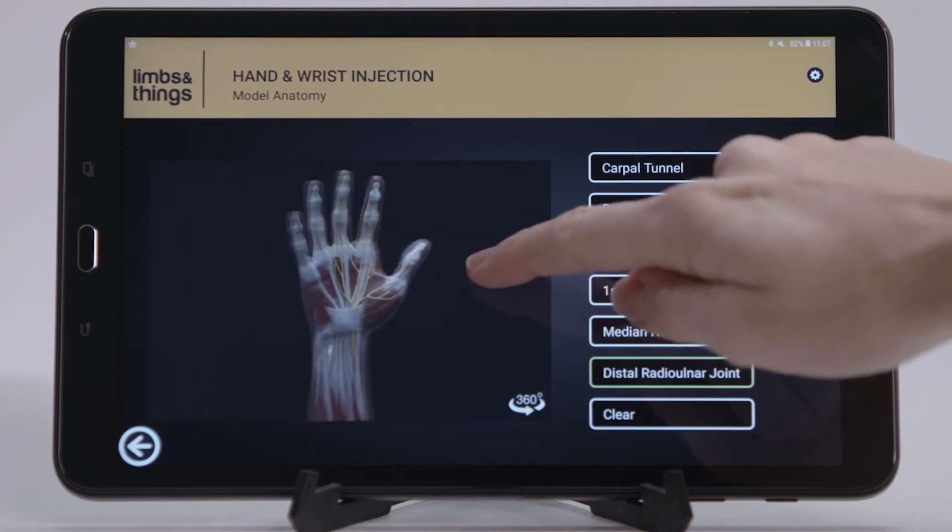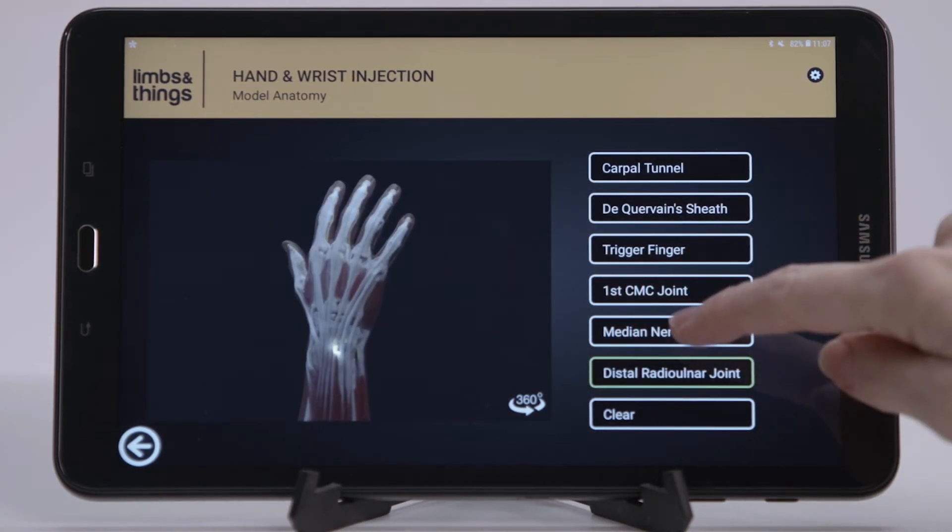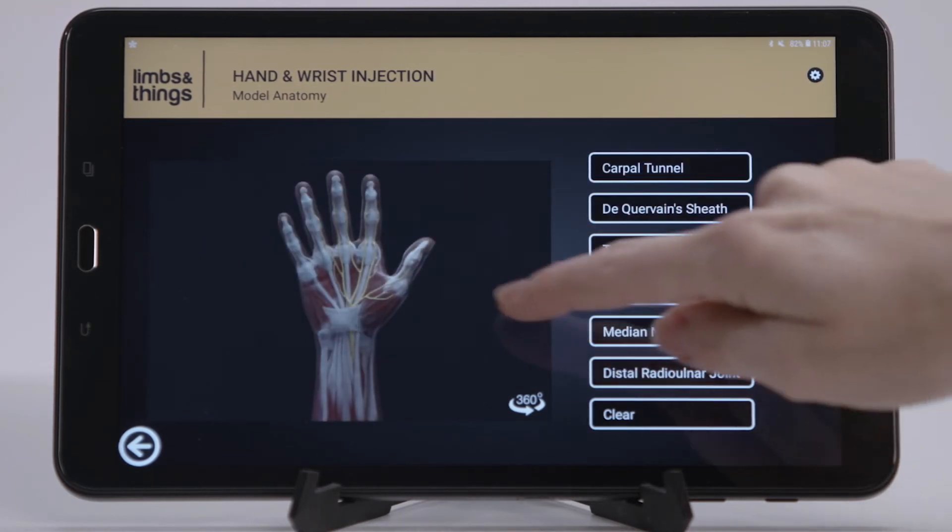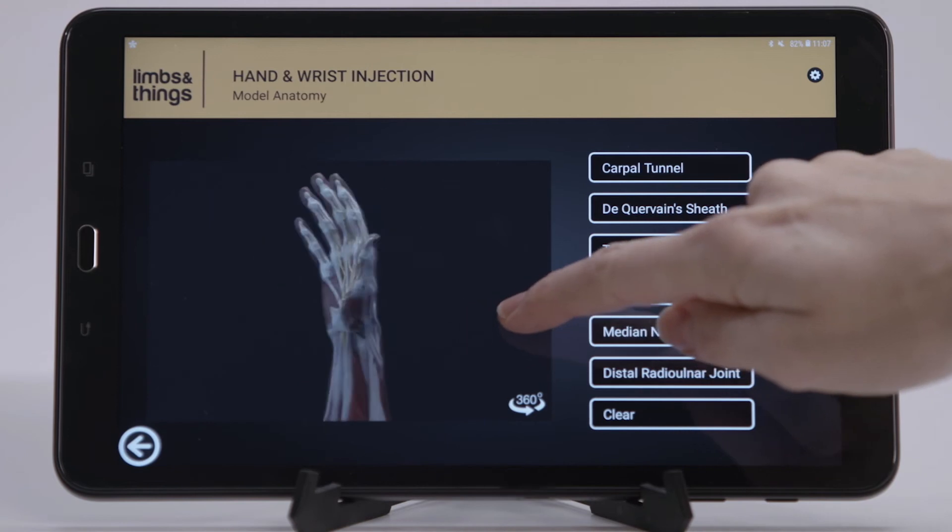The app allows for self-directed learning with both positive and negative feedback, identifying injection sites especially important for the median nerve.